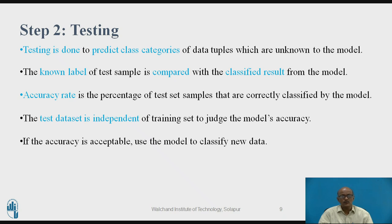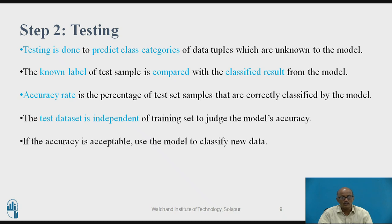Testing is done to predict the class categories of data records which are unknown to the model. The known label of the test sample is compared with the classified result from the model, and an accuracy rate is calculated — how many correct results the model has given out of the total number of test cases. The test dataset is independent of the training dataset to judge the model's accuracy.